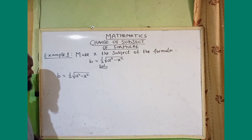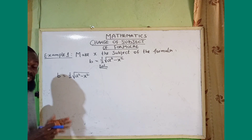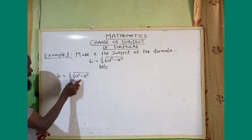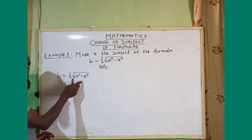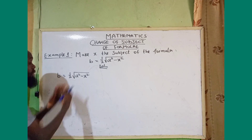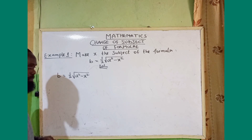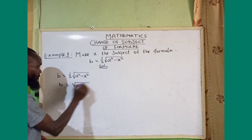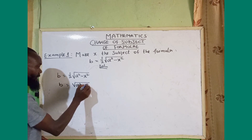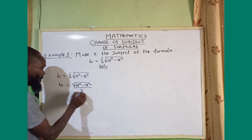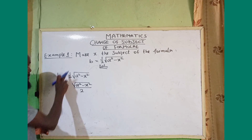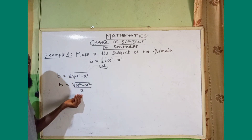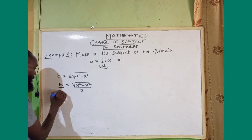From our previous lessons, one over two and the square root of a squared minus x squared are joined together by multiplication. So I can say b is equal to the square root of a squared minus x squared divided by two. That means two is the denominator, and I can write b over one here.